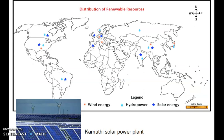This picture indicates solar energy, hydropower, wind power, etc. As you can see in the map of India, solar energy and hydropower are mainly used.